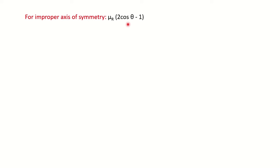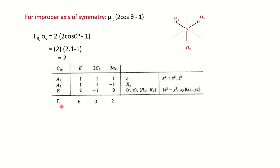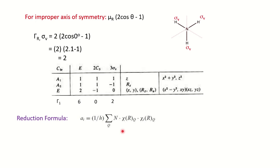For the σv operation, we use the improper axis formula: μr(2cosθ − 1). There are three vertical planes, each passing through one nitrogen and one hydrogen. So the number of unshifted atoms is 2. The angle is 0°, cos0° = 1, giving 2×(2×1 − 1) = 2×1 = 2. The reducible representation is therefore: E=6, C3=0, σv=2.